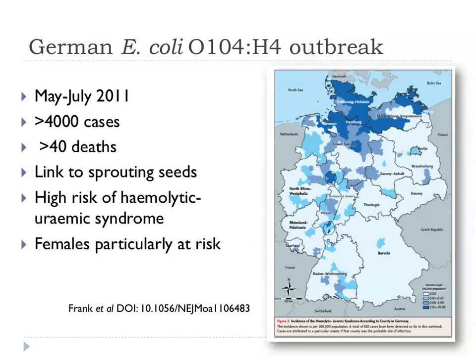Switching back to E. coli, the German E. coli outbreak has already been mentioned. It was very extensive — 4,000 cases and over 40 deaths linked to sprouting seeds. There was a higher risk of haemolytic uraemic syndrome than usually expected, and for some reason females were particularly at risk. I suspect it's because real men don't eat salad — but if anyone has a better idea, let's hear about it later.